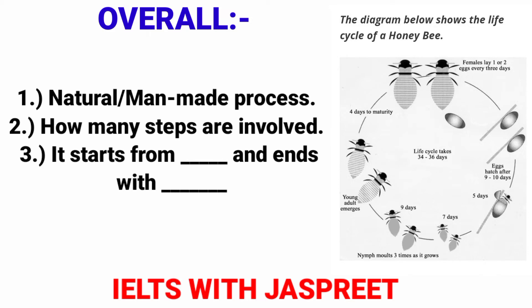The overall paragraph is the main thing in a natural process chart. You need to mention three points. First: whether it is natural or manmade. Second: how many steps are involved. Third: it starts from this and ends with this. For a life cycle, since it doesn't truly end, you mention where the cycle concludes in the picture and note it continues. You need these three sentences in the overall.